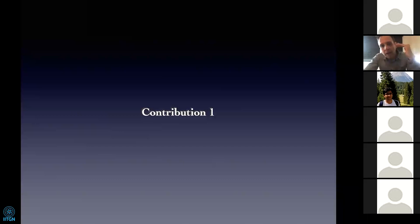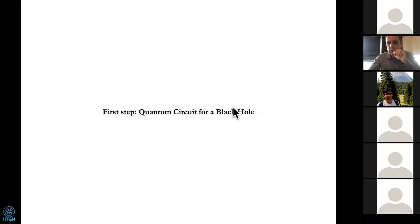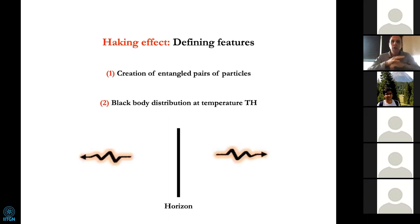For pedagogical reasons I'm going to give the results in pieces — contribution one, contribution two, et cetera — because I think it's more logical that way. The first contribution is that we build an analytical model by mapping the Hawking process to a quantum circuit. Let me do it first for a black hole only for simplicity, then we'll go to the white-black hole pair. Let me identify what defines the Hawking process.